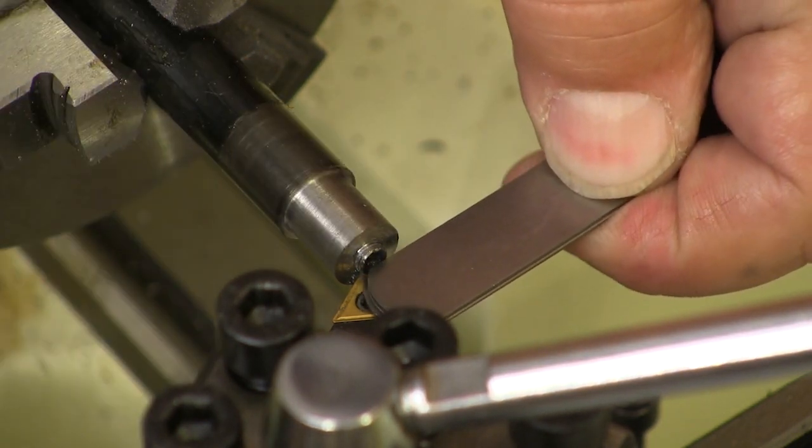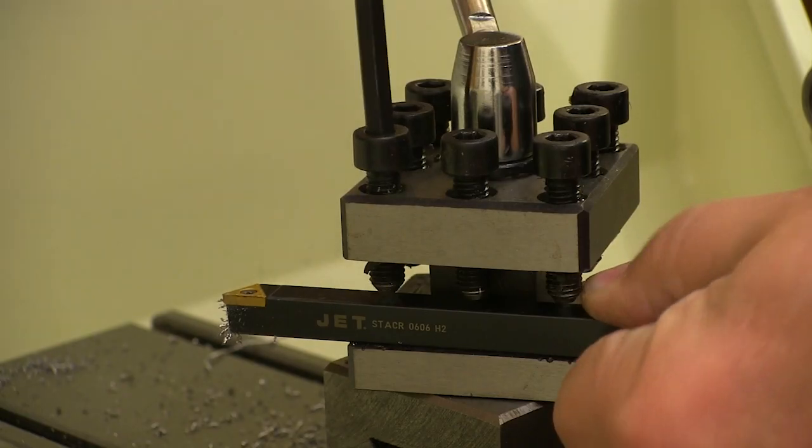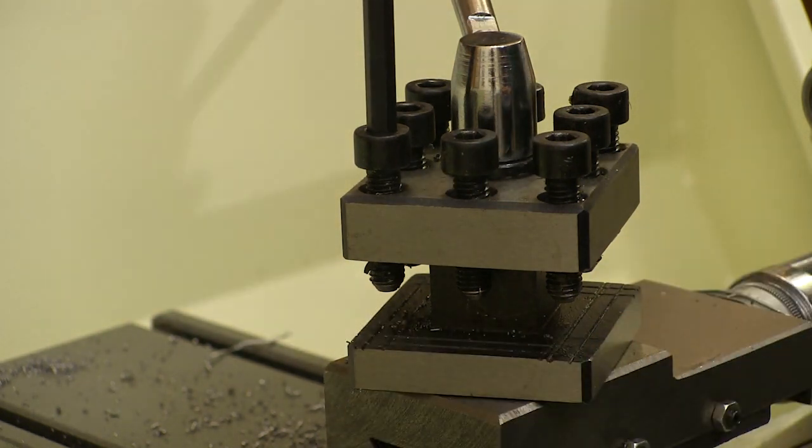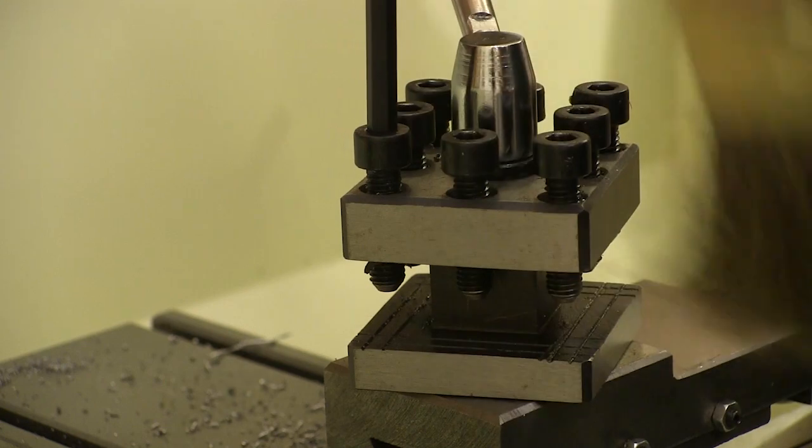This may not be the exact stack that I need, but we can get real close to start with. The first thing I did was to remove the cutter and then brush away all the chips. We want to make sure that everything is absolutely clean before we start shimming it up.